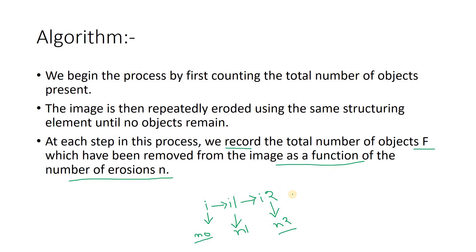The result of this subtraction at each stage — how many binary objects are remaining versus the initial — is a function of the number of erosions n. Because as we keep increasing n, more and more objects will be removed. This is our key to getting the size distribution of the grains or of the enamel image.